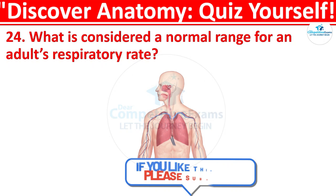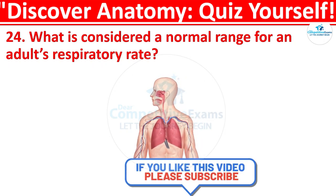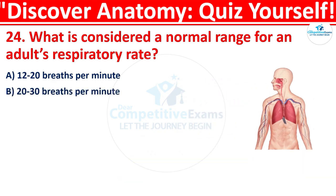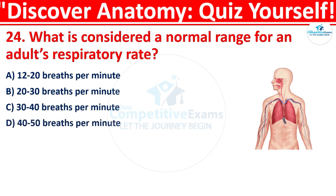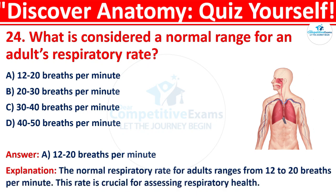Question 24: What is considered a normal range for an adult's respiratory rate? Your options are: 12 to 20 breaths per minute, 20 to 30 breaths per minute, 30 to 40 breaths per minute, or 40 to 50 breaths per minute. The correct answer is A, that is 12 to 20 breaths per minute. The normal respiratory rate for adults ranges from 12 to 20 breaths per minute, which is crucial for assessing respiratory health.